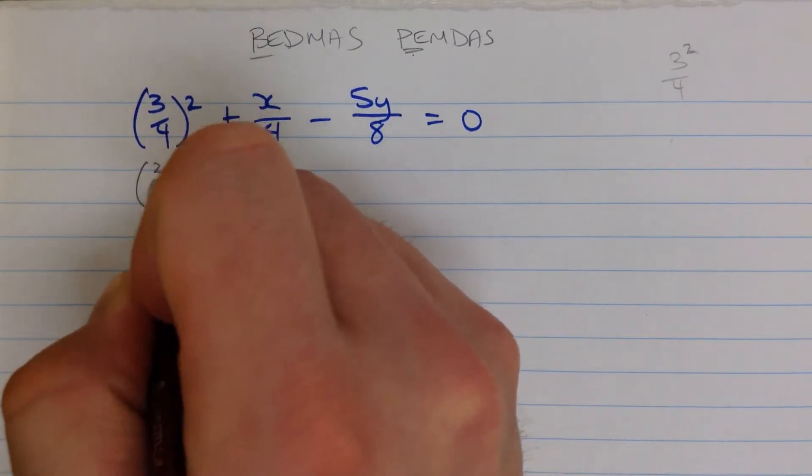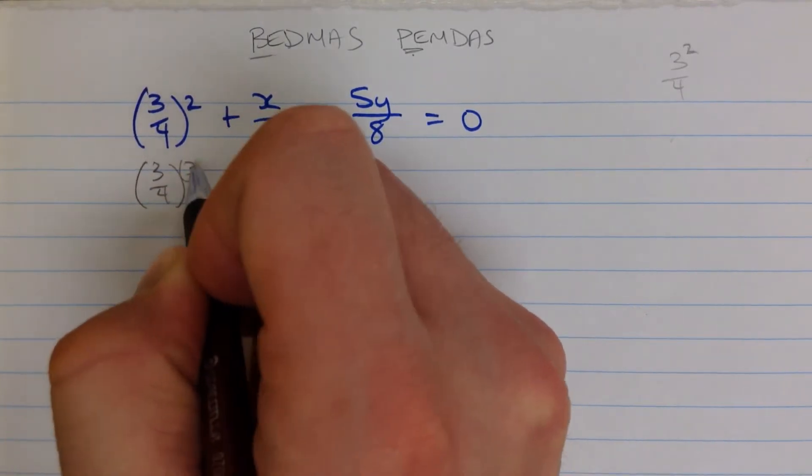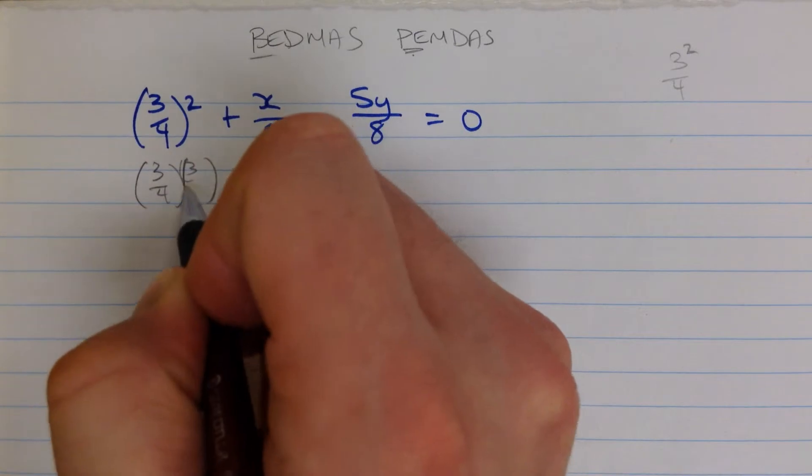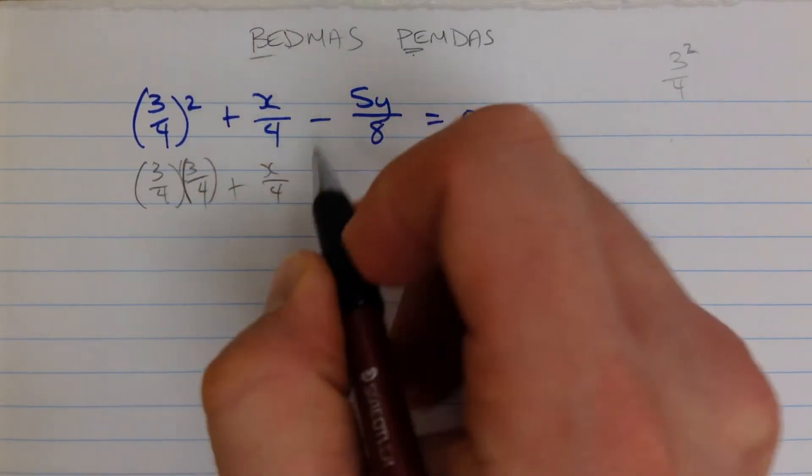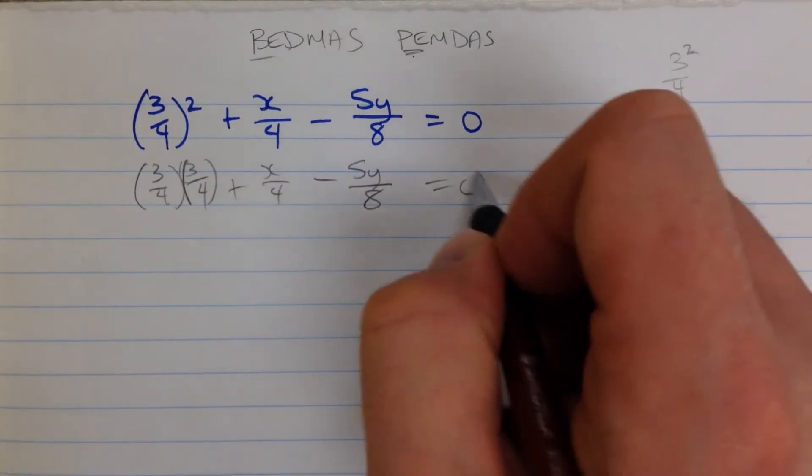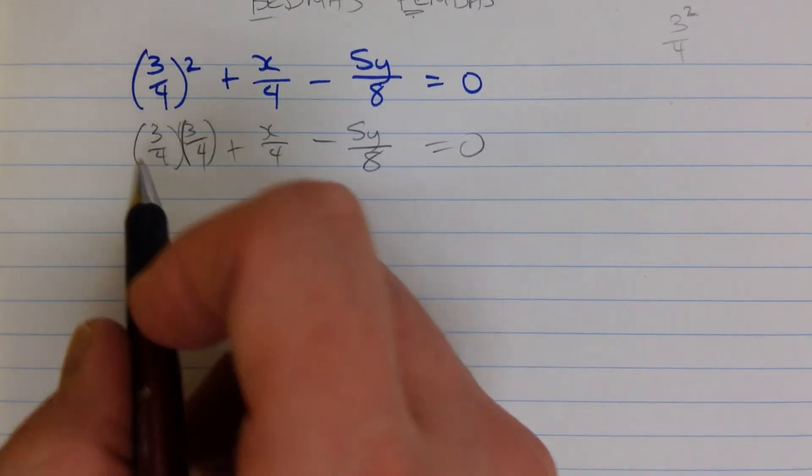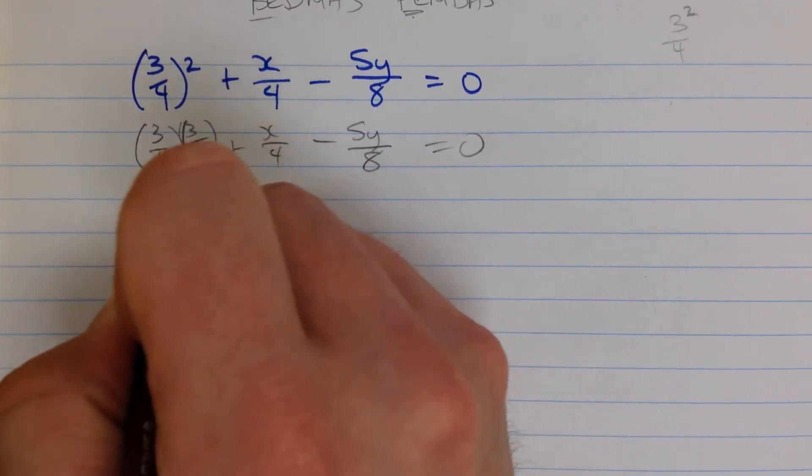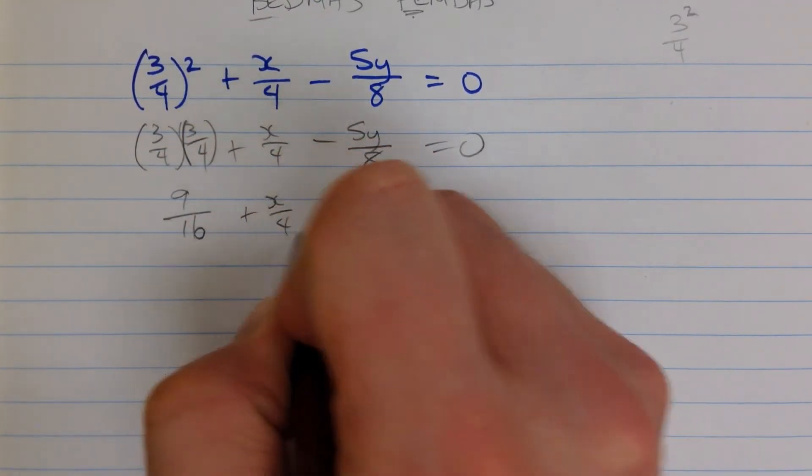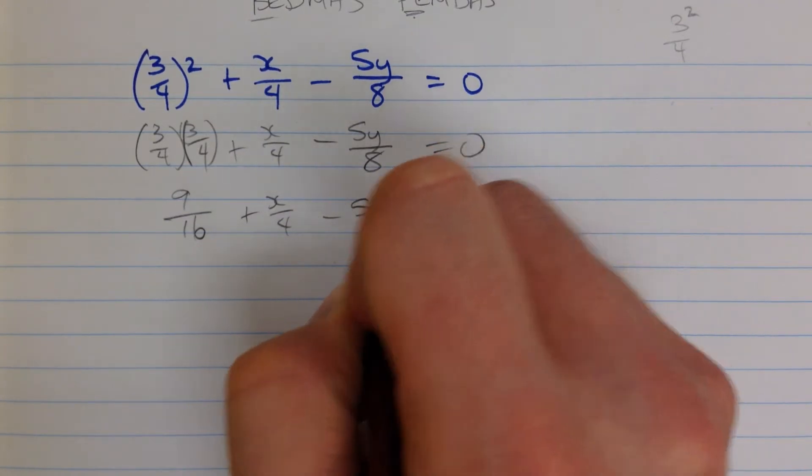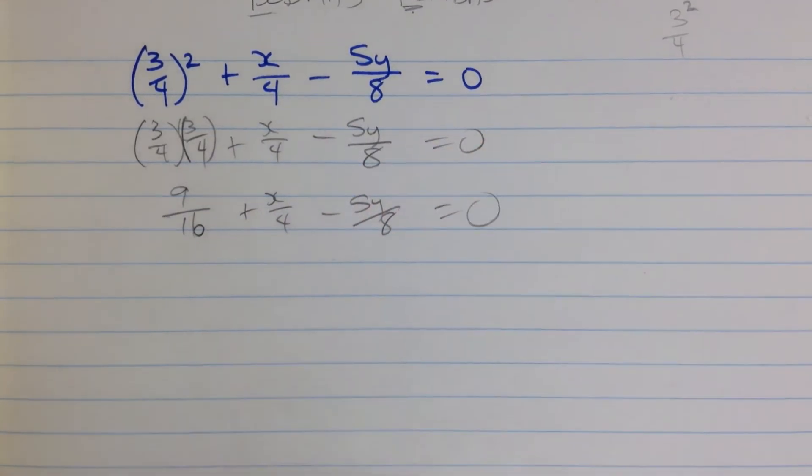So what we mean here is 3 quarters times 3 quarters, plus x over 4 minus 5y over 8 equals 0. 3 quarters times 3 quarters, multiply the tops, multiply the bottoms, that's 9 sixteenths, plus x over 4 minus 5y over 8 equals 0.